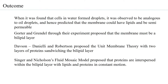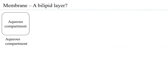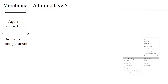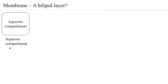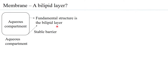Let us look at how the entire theory of the membrane being a bilipid layer came up. Within the cell you have an aqueous environment, and outside the cell you also have an aqueous environment. The membrane is able to compartmentalize. The fundamental structure of the membrane is the bilipid layer — and whether it is stable were questions that scientists began studying.